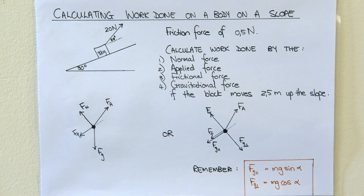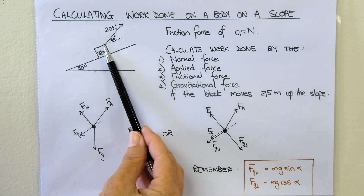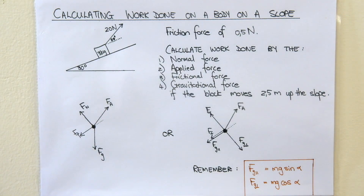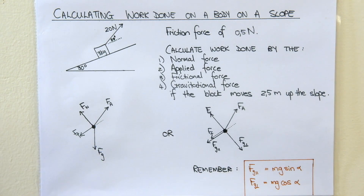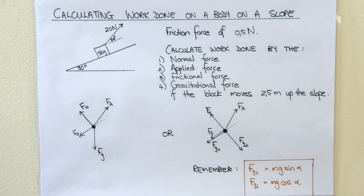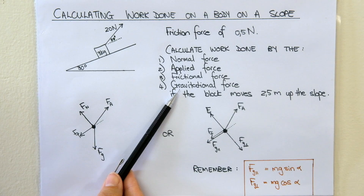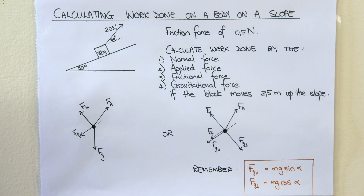All the information is on the sketch. A force of 20 newtons is acting at an angle of 20 degrees to the parallel of the slope. The slope has an angle of 30 degrees with the horizontal and we have a friction force of 0.5 newtons. You must calculate the work done by the normal force, the applied force, the frictional force, and the gravitational force if the block moves 2.5 meters up the slope.